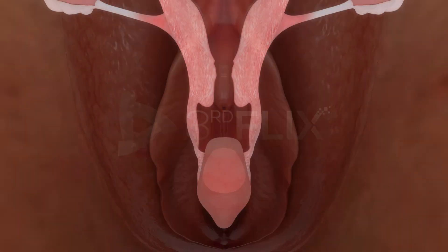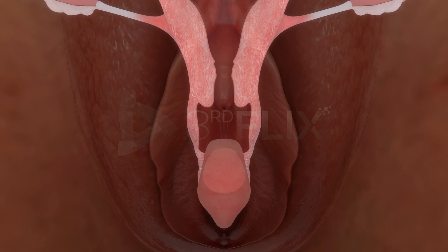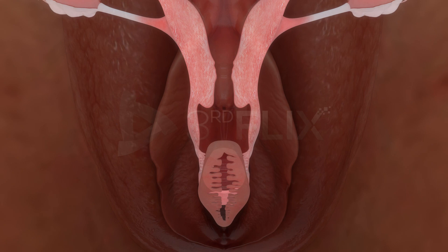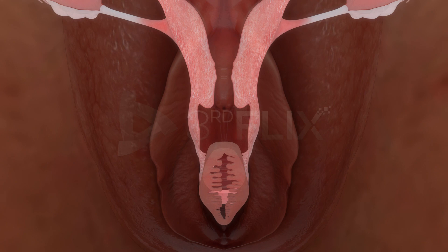The opening of the vagina is partially covered by the hymen, which is a membranous structure. It may rupture during coitus, insertion of a tampon, during a fall, or during physical activity. Hence, the presence or absence of the hymen cannot be taken as an indicator of virginity.